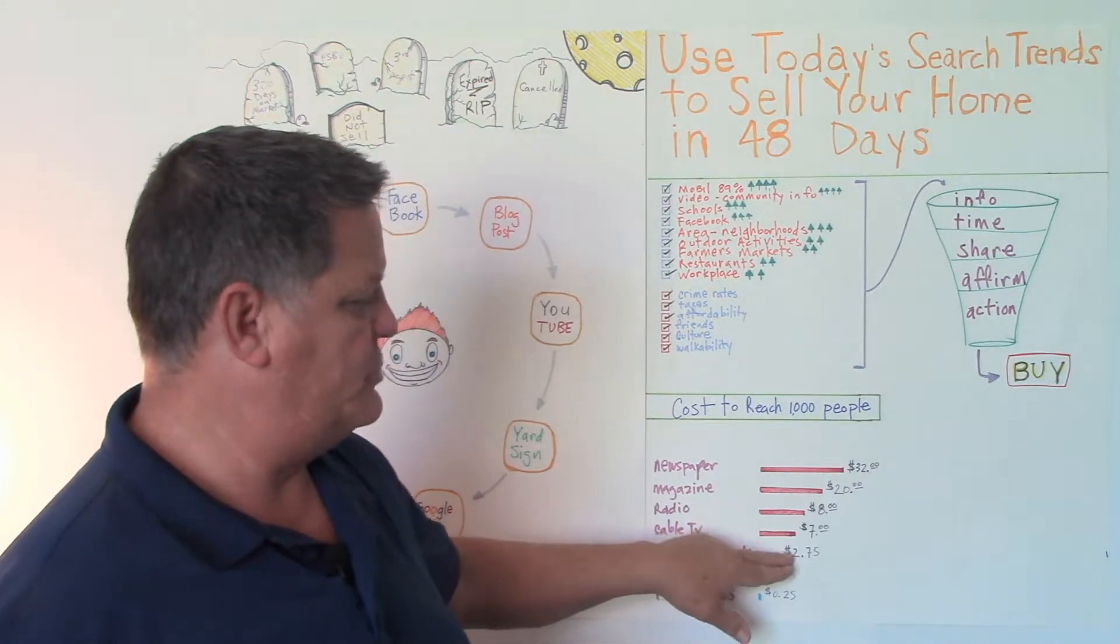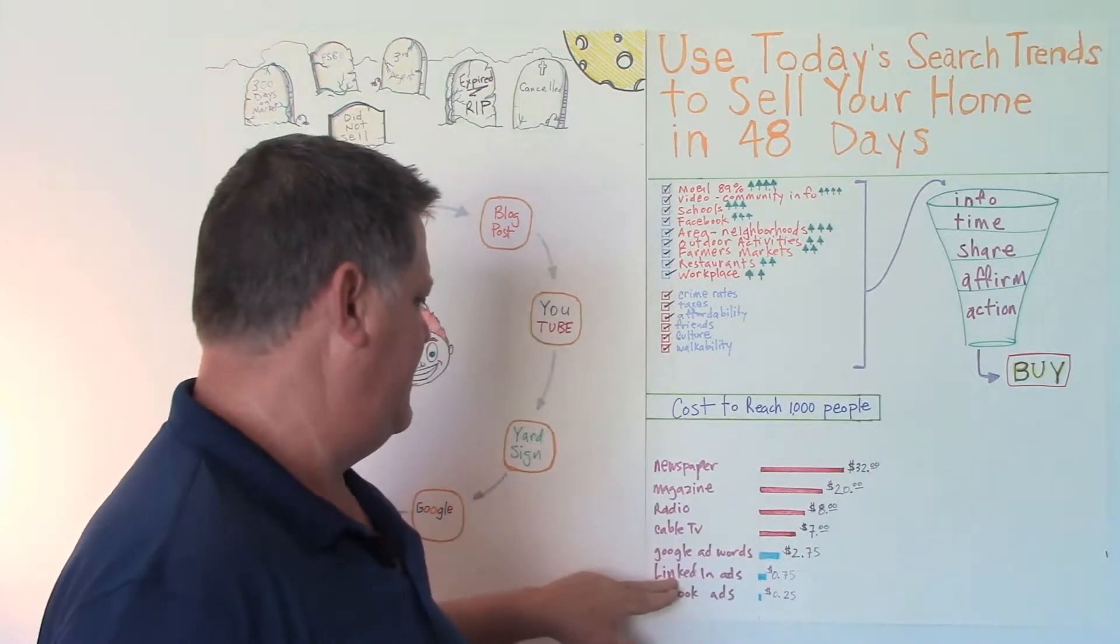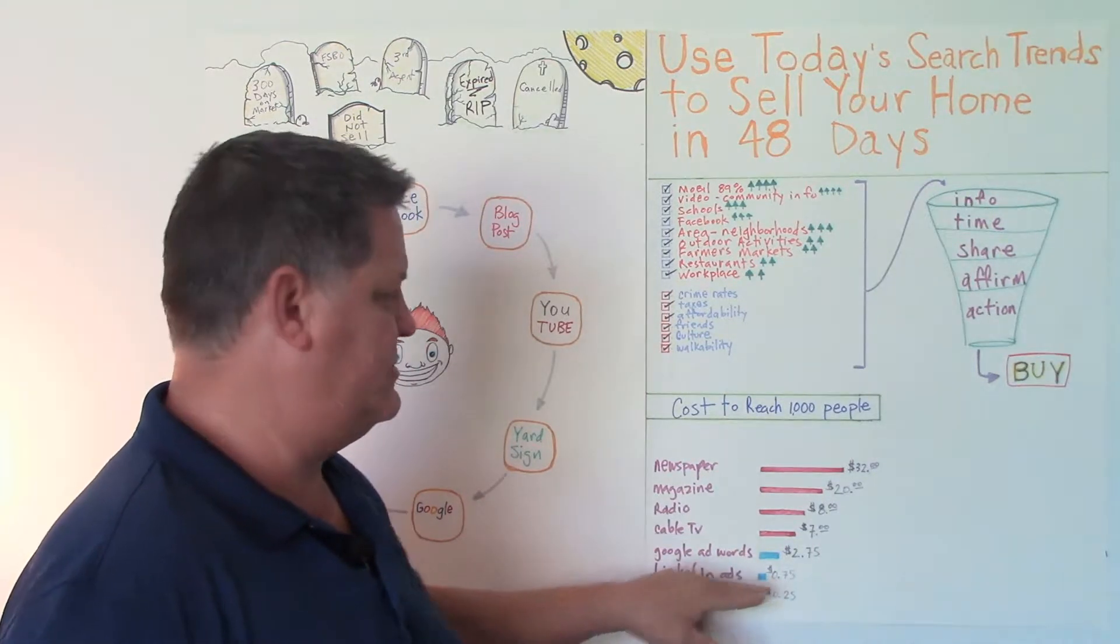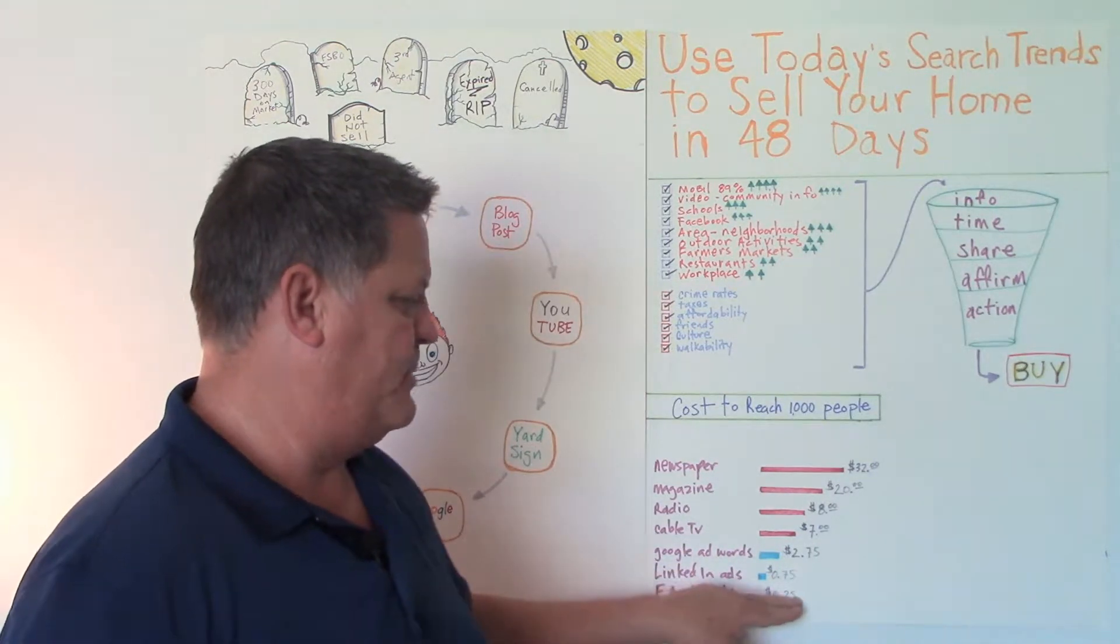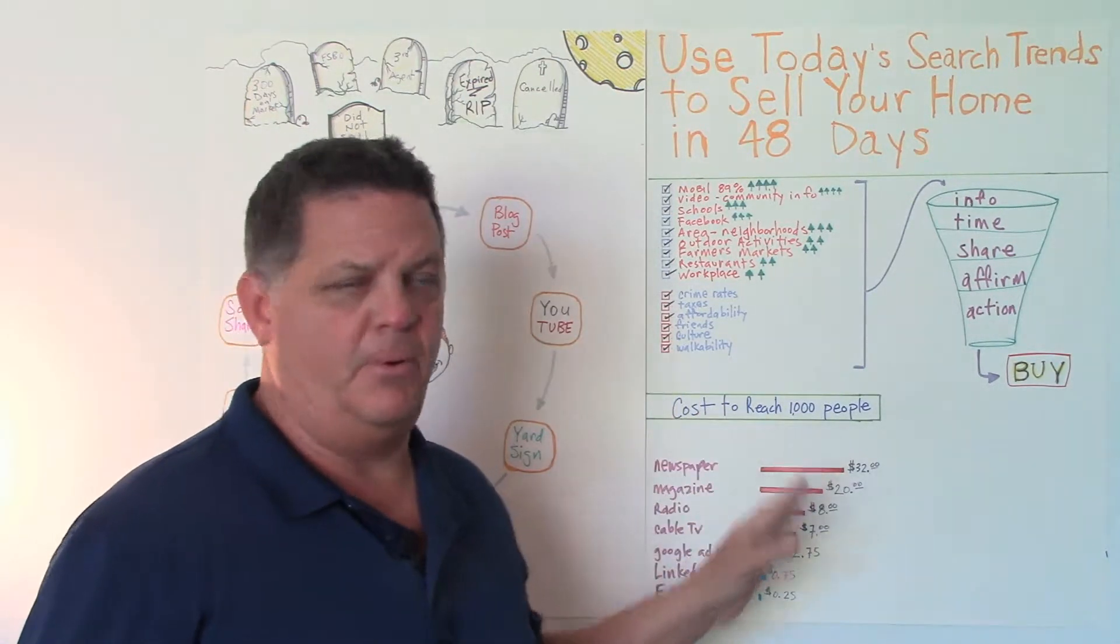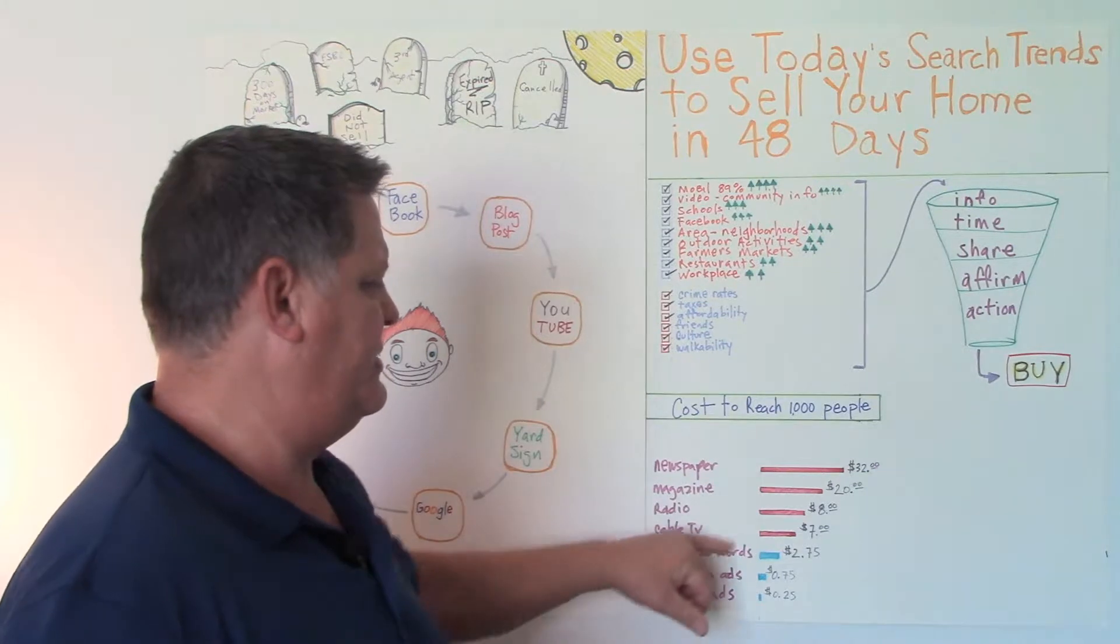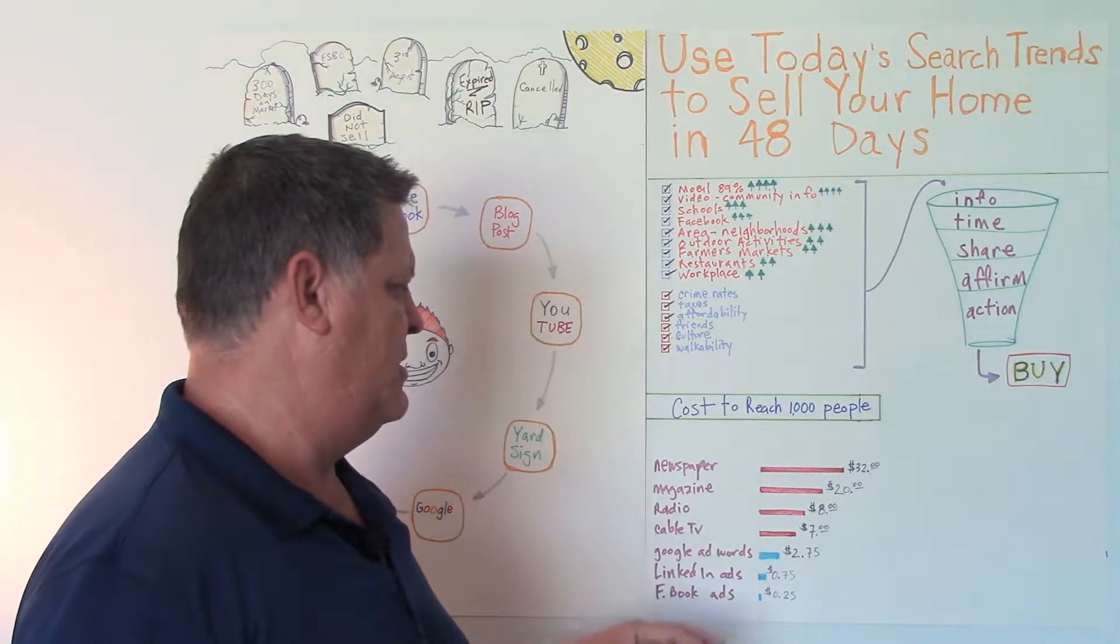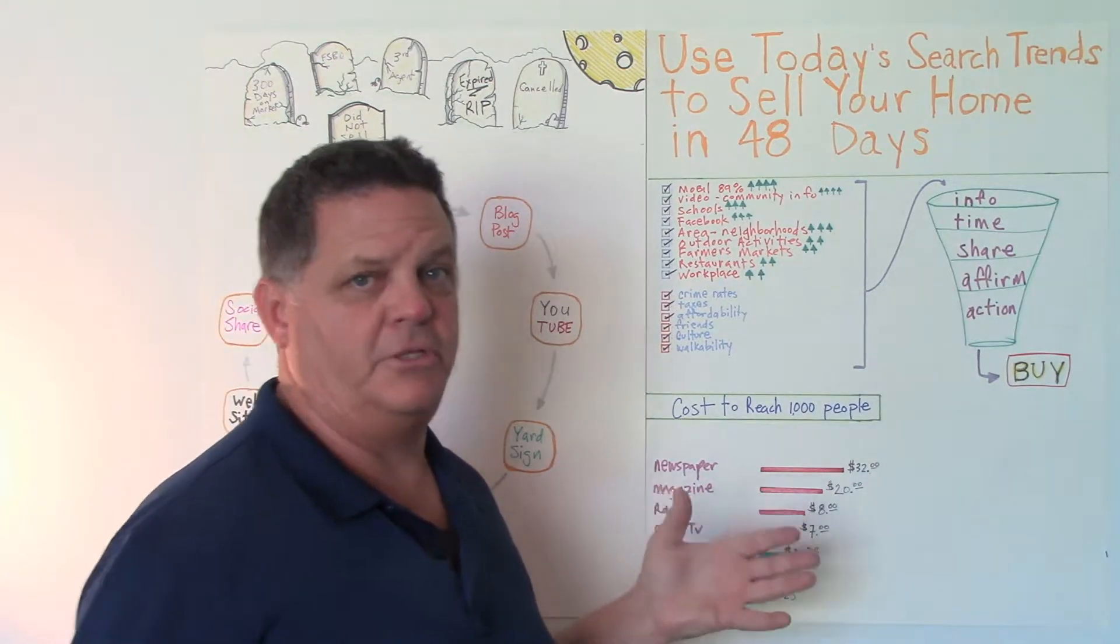Google AdWords, about $2.75. LinkedIn ads, about $0.75 to reach 1,000. And Facebook ads currently running about a quarter, $0.25 to reach 1,000 people. So you can see that the online methodology is much more cost effective and makes a lot more sense.